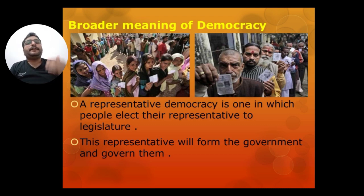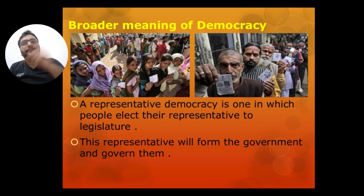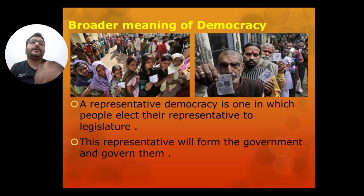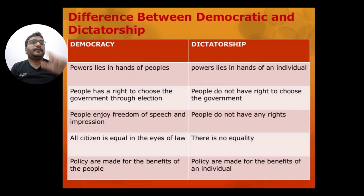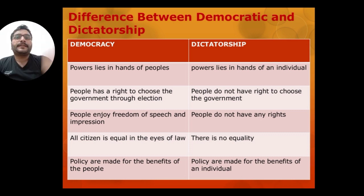In India, three forms of government exist: legislature, executive, and judiciary, plus the President. Together they form Parliament — Lok Sabha, Rajya Sabha, and the President. From within these, the government is formed, and it governs us.